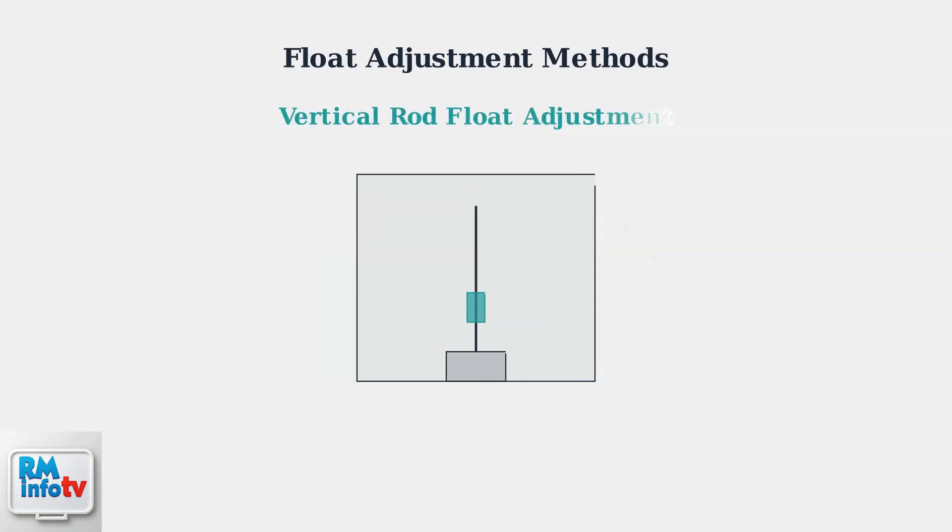For vertical rod floats, adjust the float's position on the rod to change activation levels. Moving the float lower on the rod means earlier pump activation. Moving the float higher on the rod delays activation, allowing water levels to rise more before the pump engages.